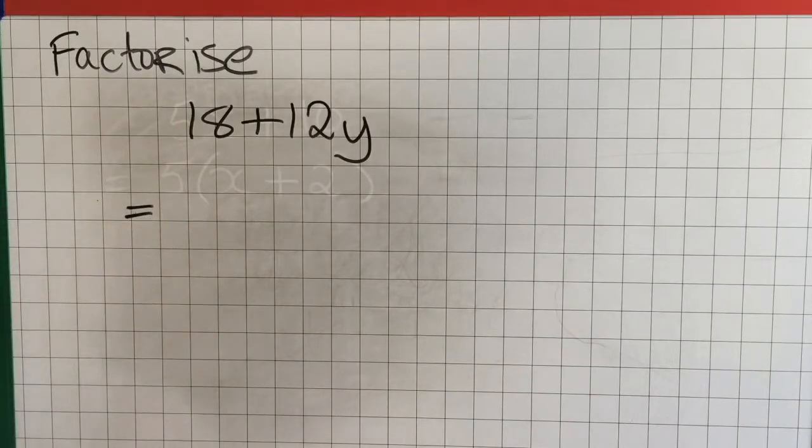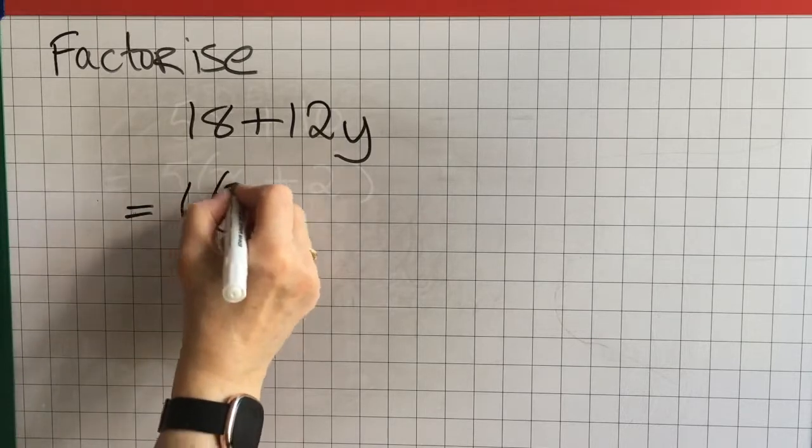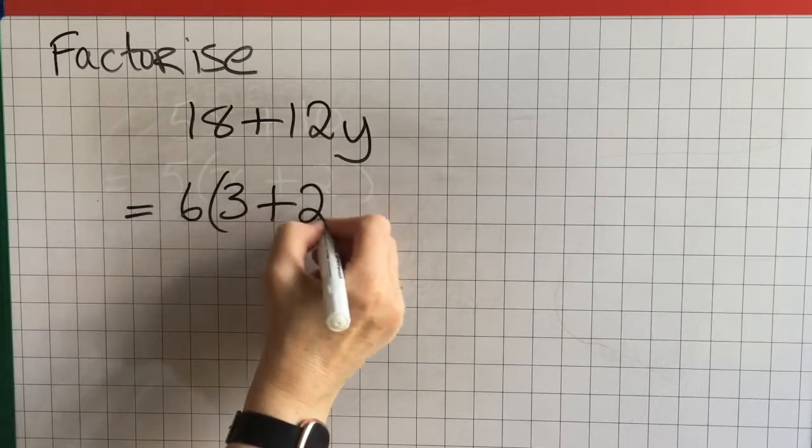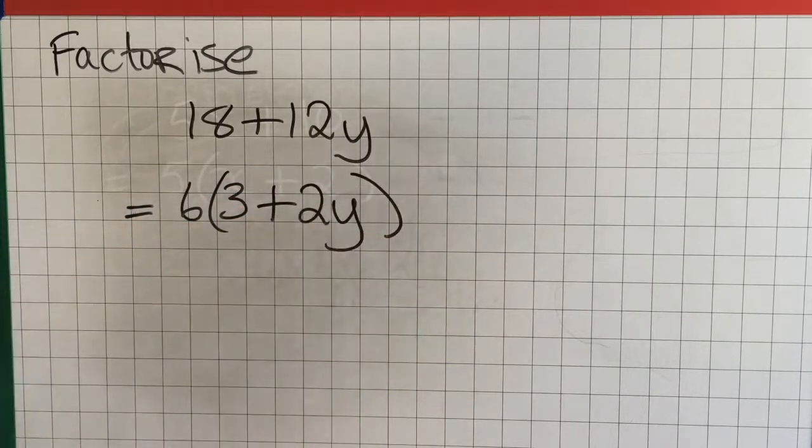Here we can see the highest common factor is 6. So while 6 is one factor, 3x plus 2y is another factor.